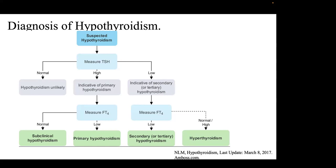For diagnosis of hypothyroidism, the first step is measuring TSH levels. High TSH indicates primary hypothyroidism; low TSH suggests secondary or tertiary. Free T4 is then measured as a confirmatory test. If free T4 is normal, subclinical hypothyroidism is suspected; if low, it confirms primary hypothyroidism.